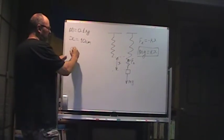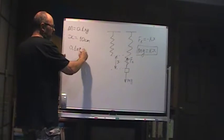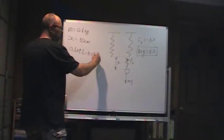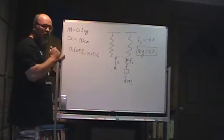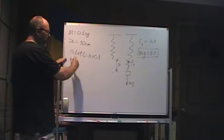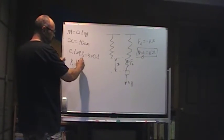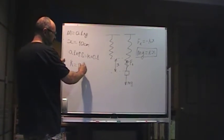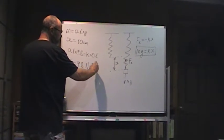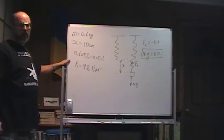First let's find the spring constant. Using this formula, we can write 0.1 times 9.8 equals K times 0.1. Don't forget that all calculations have to be in meters. From here K will be equal 9.8 N per meter. So that is the spring constant.